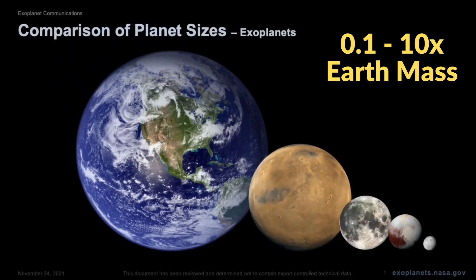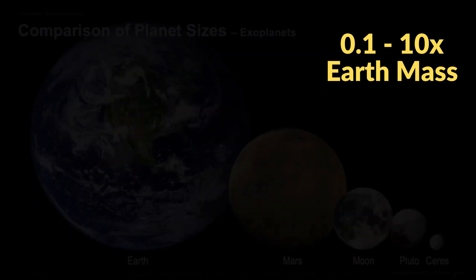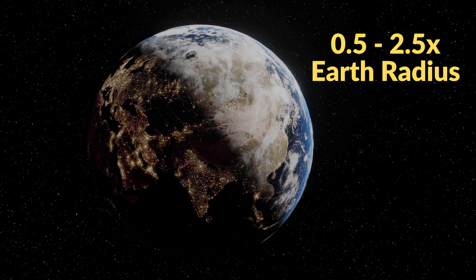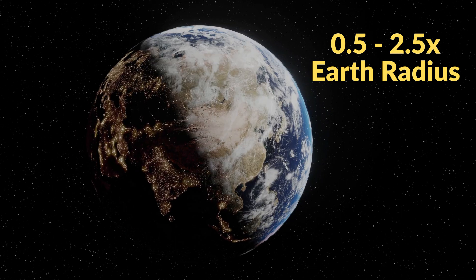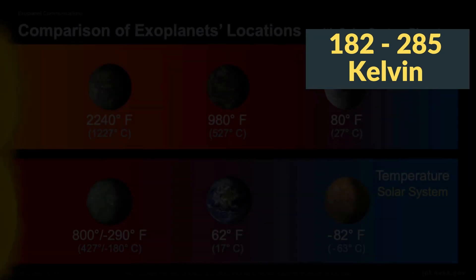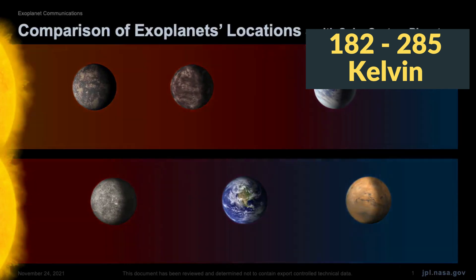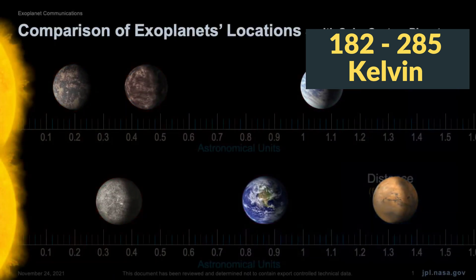It also needs to have a mass of 0.1 and 10 Earth masses. The radius of a habitable exoplanet would range from 0.5 to 2.5 Earth radii. And most importantly, the temperature range needs to be between 182 and 285 Kelvin.